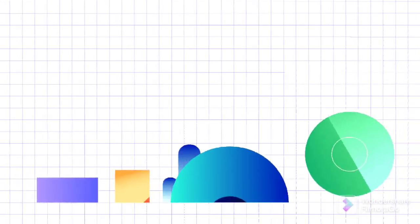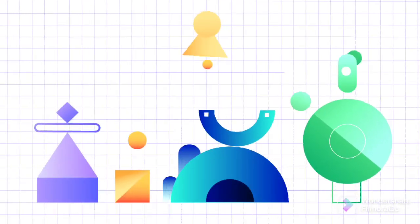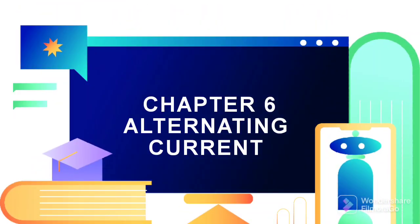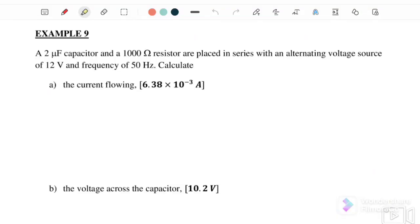Welcome to my channel. Today we continue to chapter 6, alternating current. In this video, we are going to discuss section 6.3: resistance, reactance, and impedance. This is part 2, so we will start from example 9.